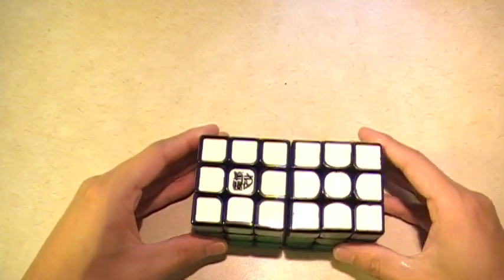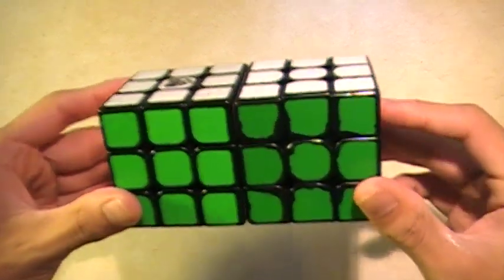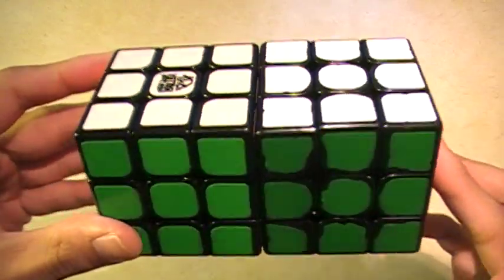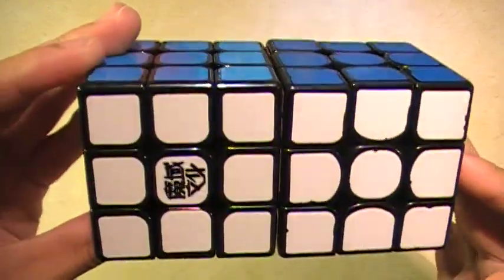So we're going to start off with a quick size comparison. This is the Yuxin 3x3 which is 57mm and they're pretty much exactly the same.